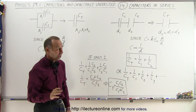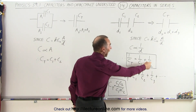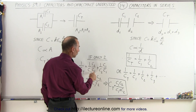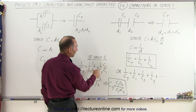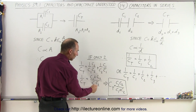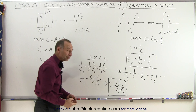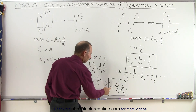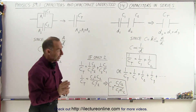Now, if there are only two capacitors, there's a handy equation to use. Instead of using the inverse sum equation, we find the common denominator by multiplying 1 over C1 by C2 over C2, and 1 over C2 by C1 over C1. This gives a common denominator of C1 times C2 and a numerator of C1 plus C2. Taking the inverse, we get the product-over-sum equation: the total capacitance equals C1 times C2 divided by C1 plus C2. Again, that's only valid if there are two capacitors.